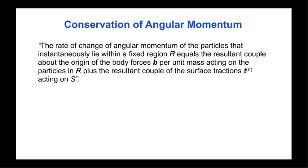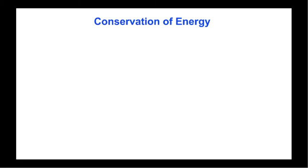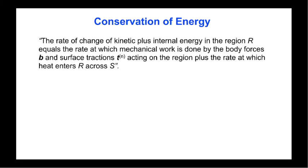Conservation of angular momentum states that the rate of change of angular momentum of the particles within a fixed spatial region r equals the resultant couple of the body forces plus the resultant couple of the surface tractions acting on the surface. Subject to the assumption that there are no distributed body or surface couples, this law leads to the result that the stress tensor is symmetric: T equals T-transpose, or T_ij equals T_ji.